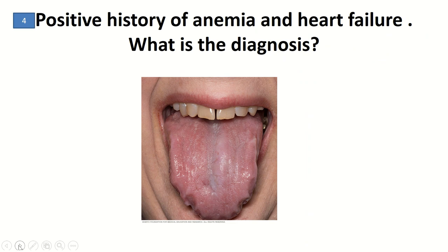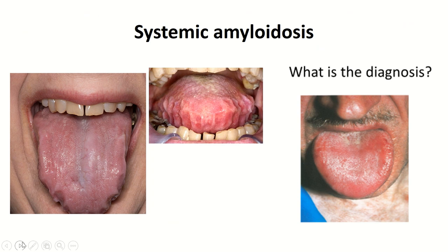Here there is a positive history of anemia and heart failure, and as seen in the figure, there is a large corrugated tongue indicative of an infiltrative process such as systemic amyloidosis. Additional examples of systemic amyloidosis show purpura and petechiae in addition to the large corrugated tongue.